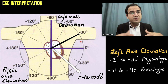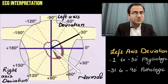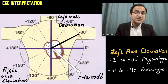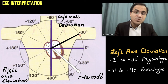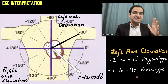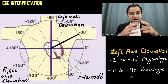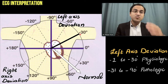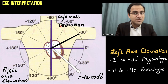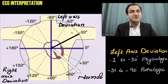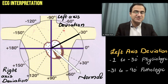Minus 1 to minus 30 degrees is considered physiologic left axis deviation. But if the axis deviates more than minus 30 degrees — from minus 30 to minus 90 degrees — that is pathologic left axis deviation. A normal hypertrophy in athletes cannot cause this much deviation. If the vector is present beyond minus 30 degrees, it indicates a pathological problem in the heart causing left axis deviation.